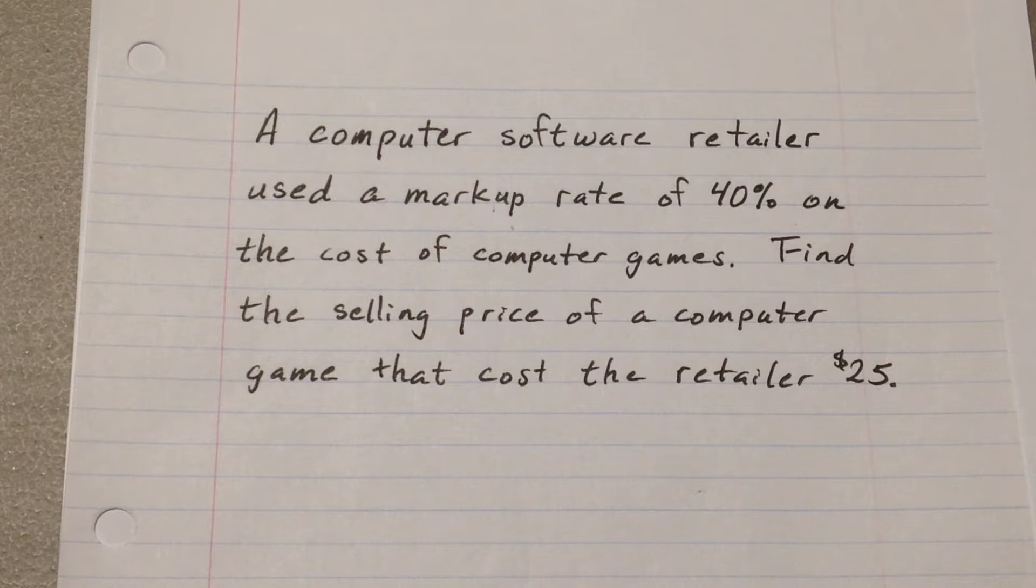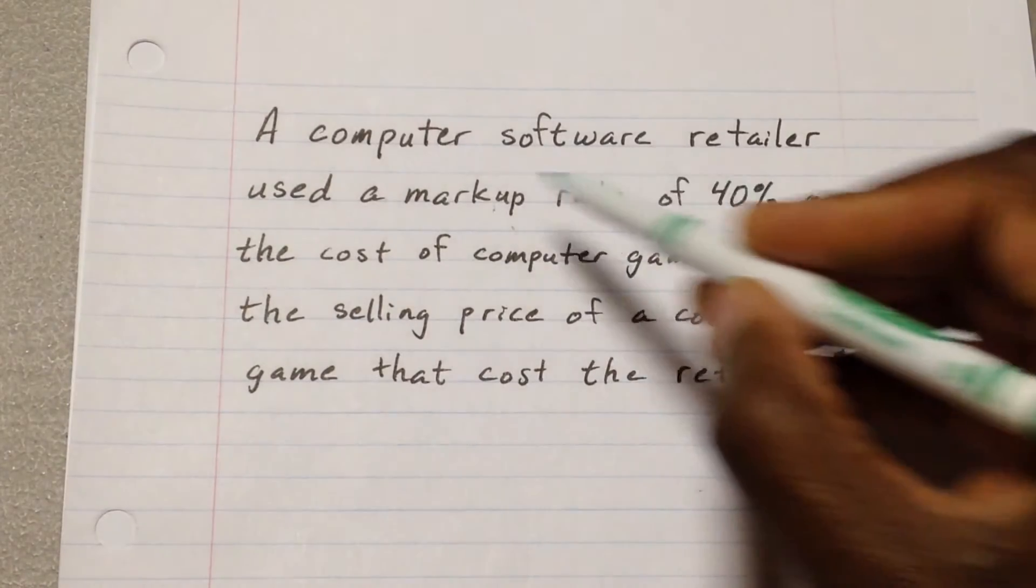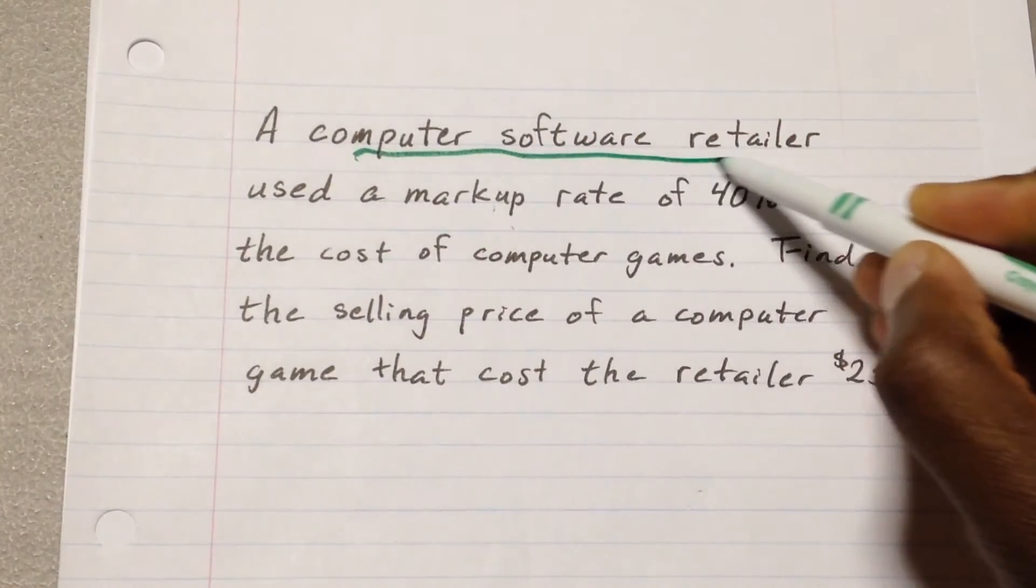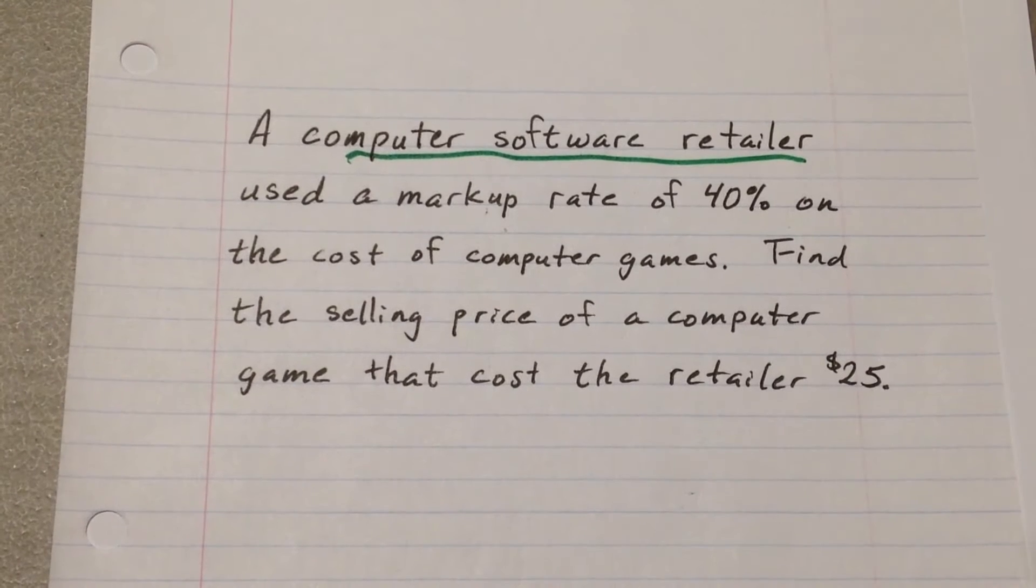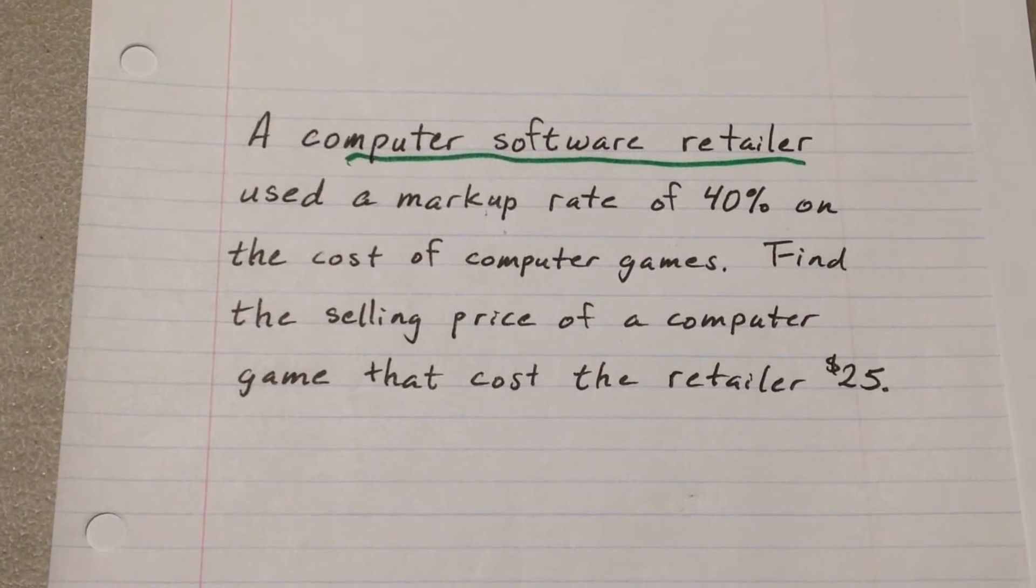Before we even talk mathematics, let's see if we can figure out what's going on in the story. There's a computer software retailer. That's someone who's selling computer software, games, computer games, different types of programs.